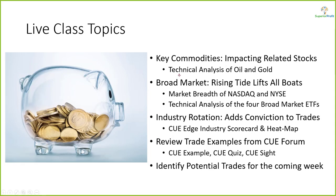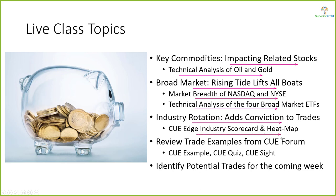As usual, we will analyze oil and gold using technical charts, as they tend to impact related stocks. When we are swing trading stocks, we like to take trades in the direction of the market. We will analyze the market's direction using market breadth of NASDAQ and NYSE, and also technical charts of the four broad market ETFs. In addition to aligning trades with the market, we like to align them with industry strength using industry scorecard and heatmap. Along the way, we may look at recent trade ideas shared in QTraders forum and try to find potential trades for the coming week.